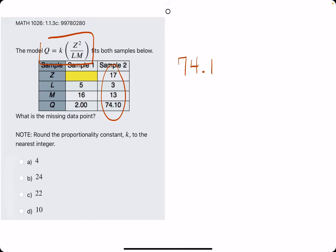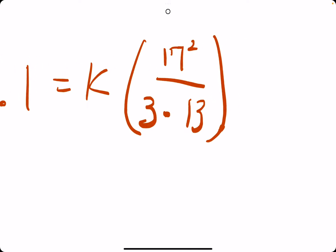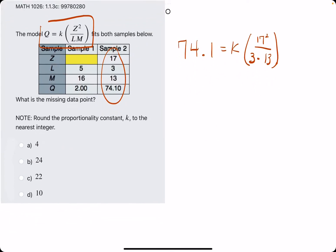So Q is equal to 74.1, K is what we're solving for. Z is 17, and it looks like Z is being squared, so we can't forget to square that, over L times M, where L is 3 and M is 13. So it may be easiest to go ahead and calculate 17 squared over 3 times 13.